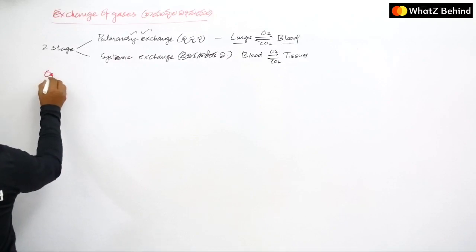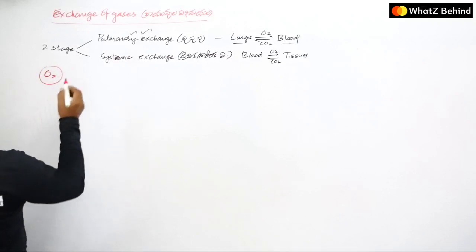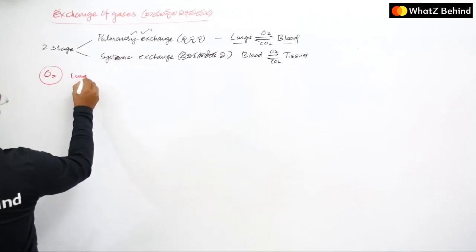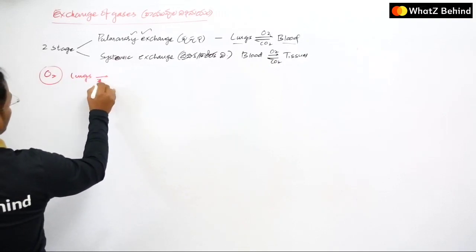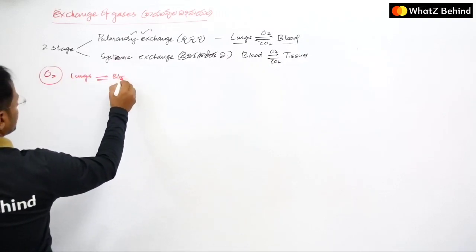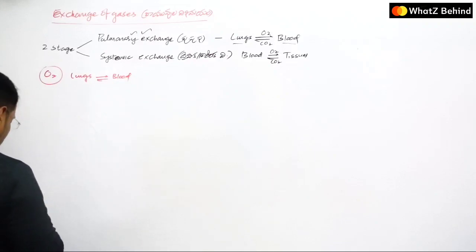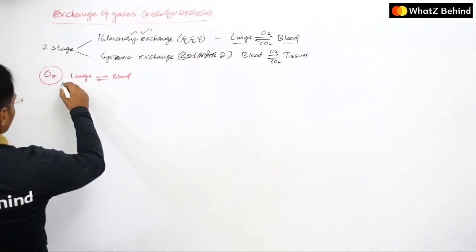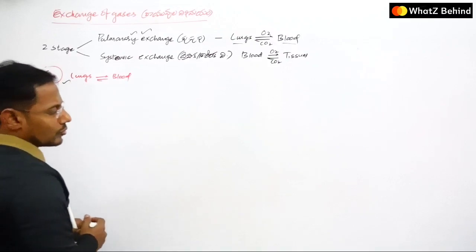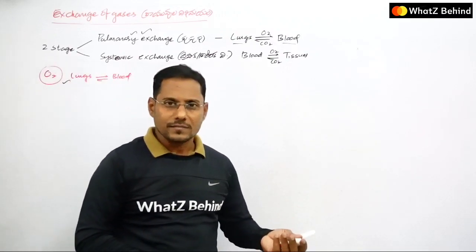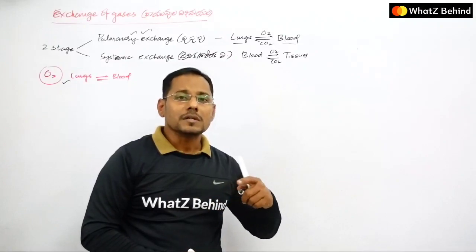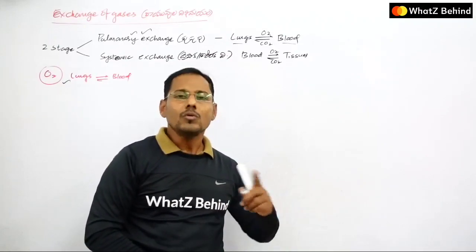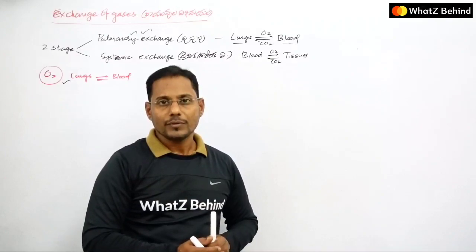First, we have to talk about oxygen. Any gas, according to the concentration gradient, moves from higher concentration to lower concentration. So when the partial pressure of a particular gas is higher, the concentration gradient is also higher — the gas moves from higher concentration gradient to lower concentration gradient.